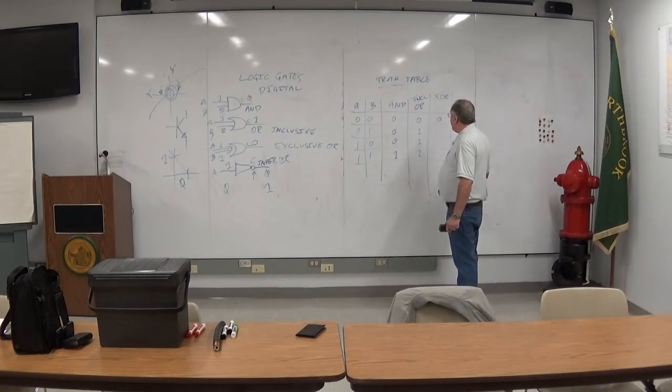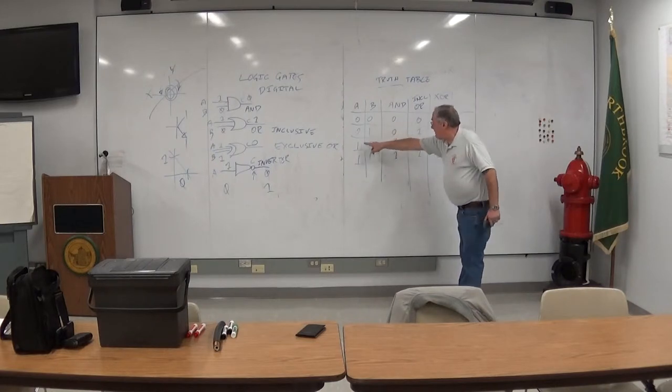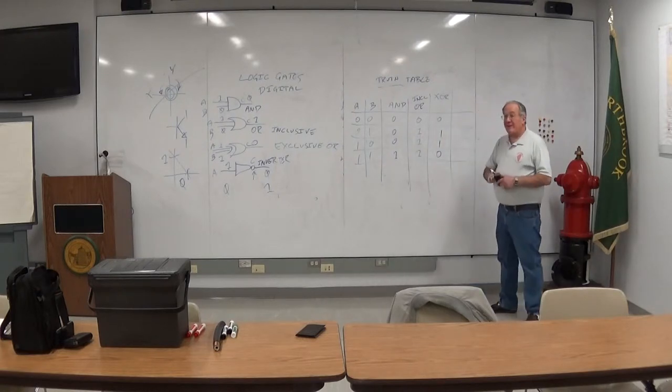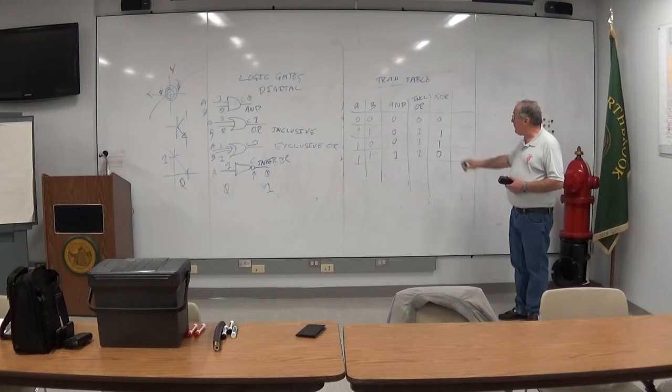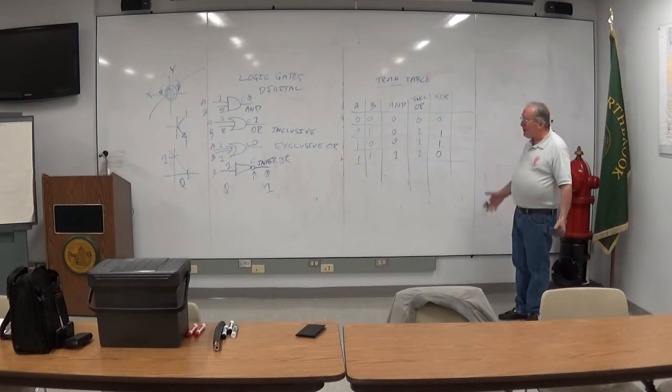If both are zero, you're going to get a zero. If both are one, you're going to get a zero. Only if one of them happens to be a one, you get the true output, the plus output, the one output.